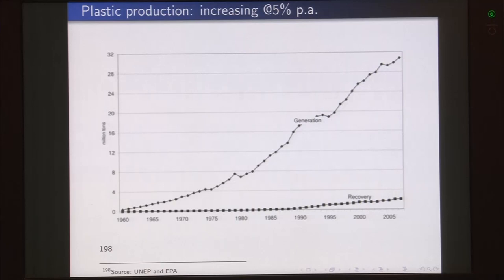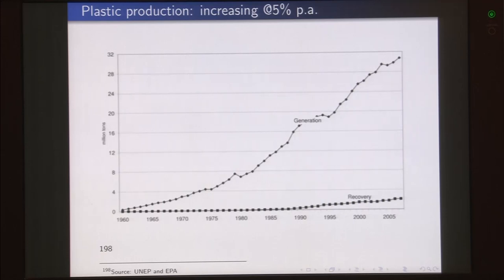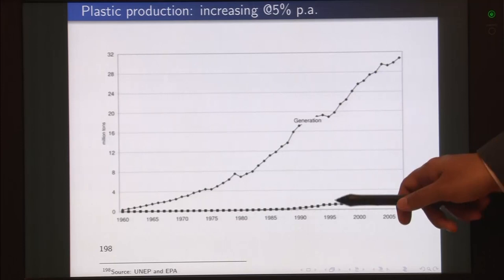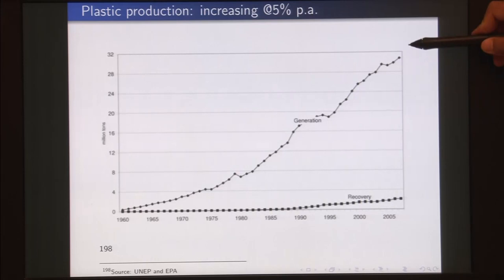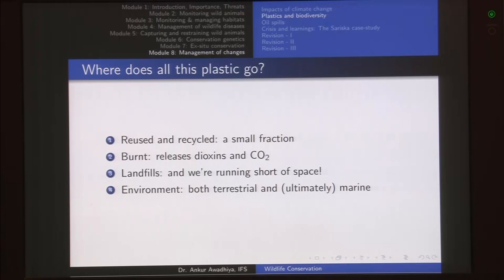This top curve shows us plastic production in the world, increasing at 5 percent per annum. What happens to all of these plastics? How much of it is recovered, reused or recycled? Looking at the graph, we can observe very clearly that there is hardly any amount of plastic being reused or recycled. So where does all of this plastic go?